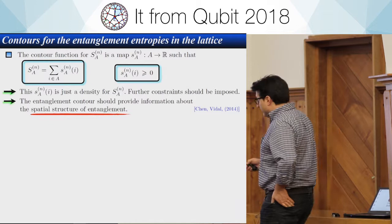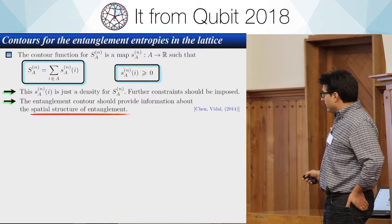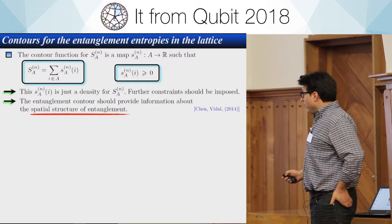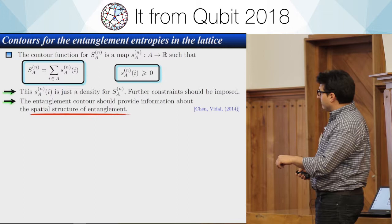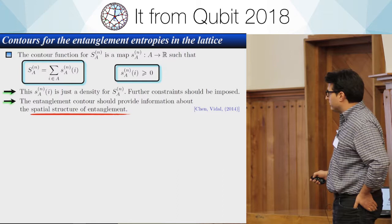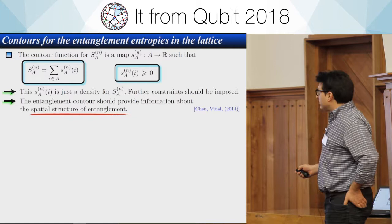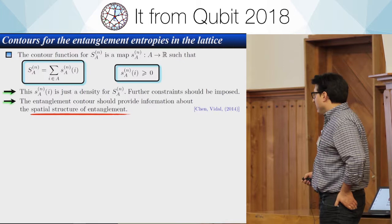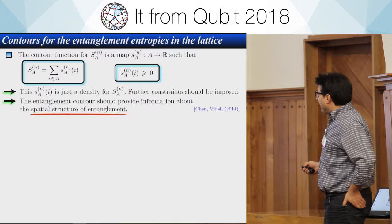In the second part, I want to discuss what are called contour functions for entanglement entropy, mainly on lattices. A contour function, as introduced by Chen and Vidal on the lattice, is a function defined at each lattice site that assigns a real value to each lattice point, such that if you sum over the lattice points of the subsystem you recover the Rényi entropies or entanglement entropy. The contribution of each site must be positive.